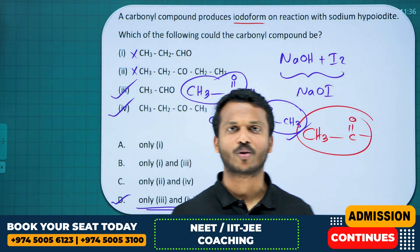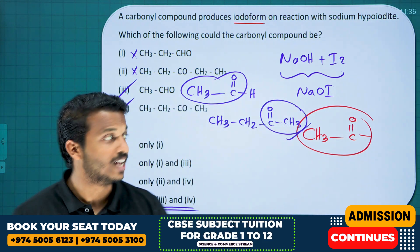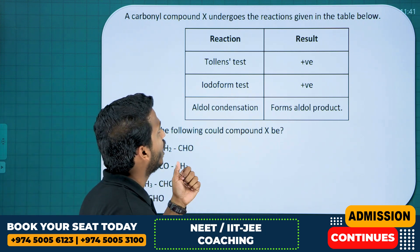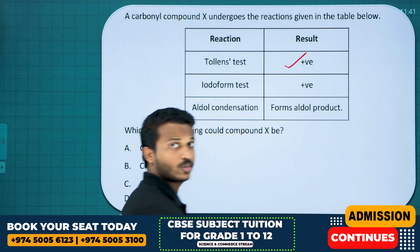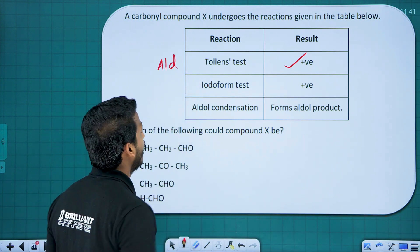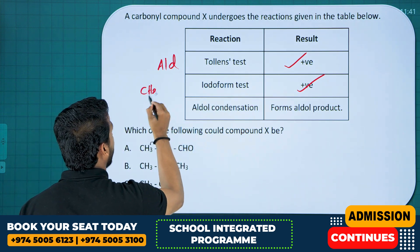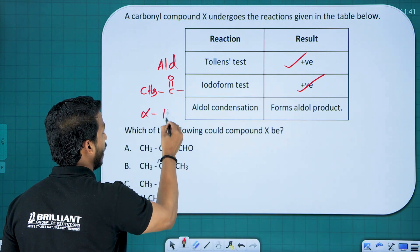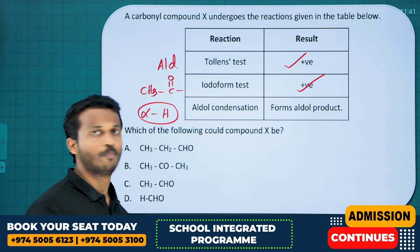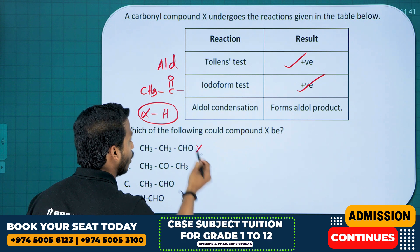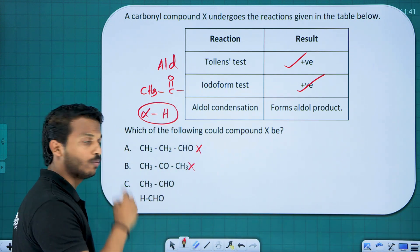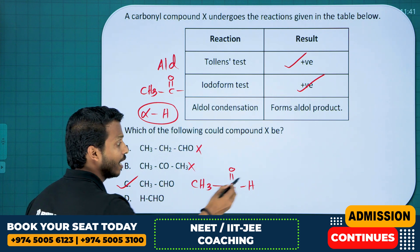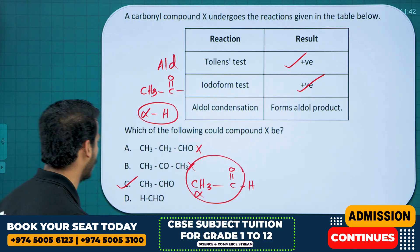So if it is a carbonyl compound — aldehyde or ketone — if it wants to give the iodoform test, the CH₃CO group must be present. Next question: a carbonyl compound X undergoes reactions given in the table. It gives a positive Tollens' test, meaning it can be an aldehyde. It gives the iodoform test, meaning it is an aldehyde with a CH₃CO group. And aldol condensation forms an aldol product, meaning it contains alpha hydrogen. Option A is an aldehyde but does not contain the CH₃CO group. Option B is a ketone — ketones do not give Tollens' test. Option C is CH₃CHO — it is an aldehyde, contains CH₃CO group, and contains alpha hydrogen. So option C is the answer.